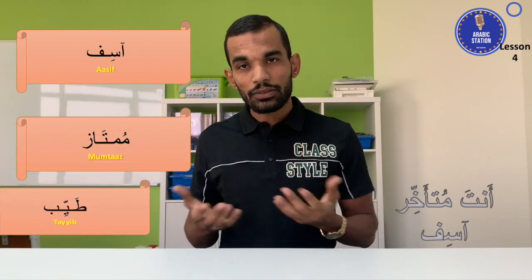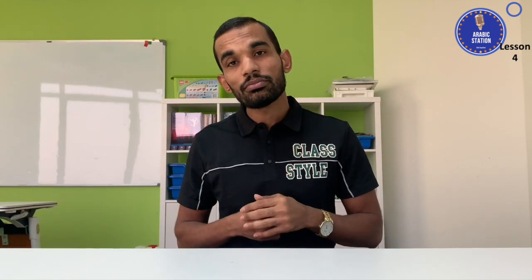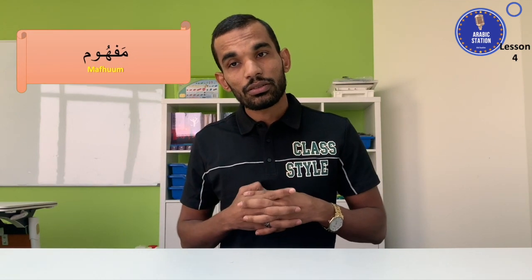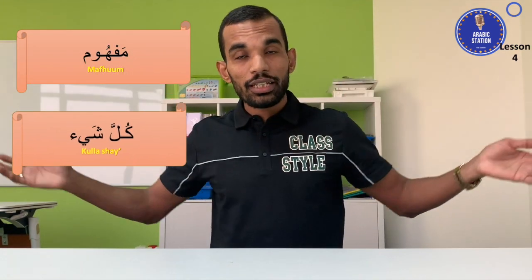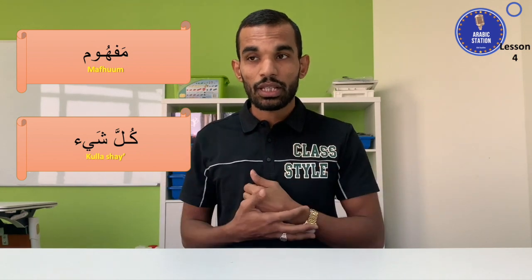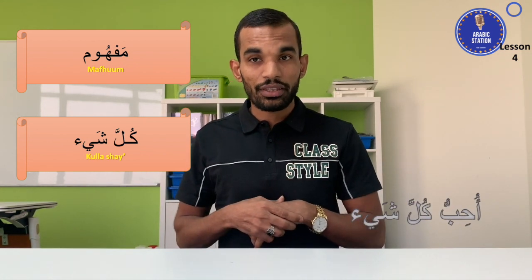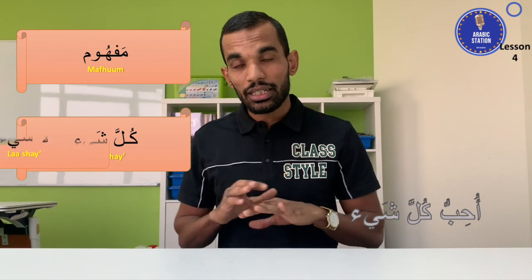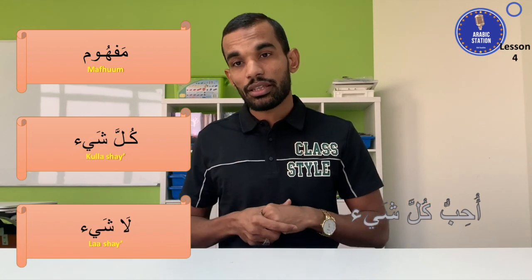Tayyib means okay. Mafhoom means understood. Kula shay means everything — for example, 'Uhhibbu kula shay' means I like everything. La shay means nothing.